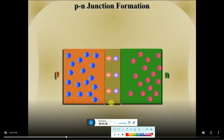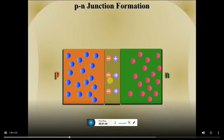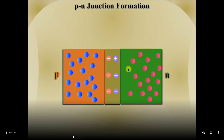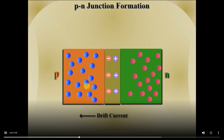As the electric field in the PN junction is directed from positive ions towards the negative ions, few electrons from the p region move towards the n region and few holes from the n region move towards the p region. In this way a drift current is established in the PN junction.